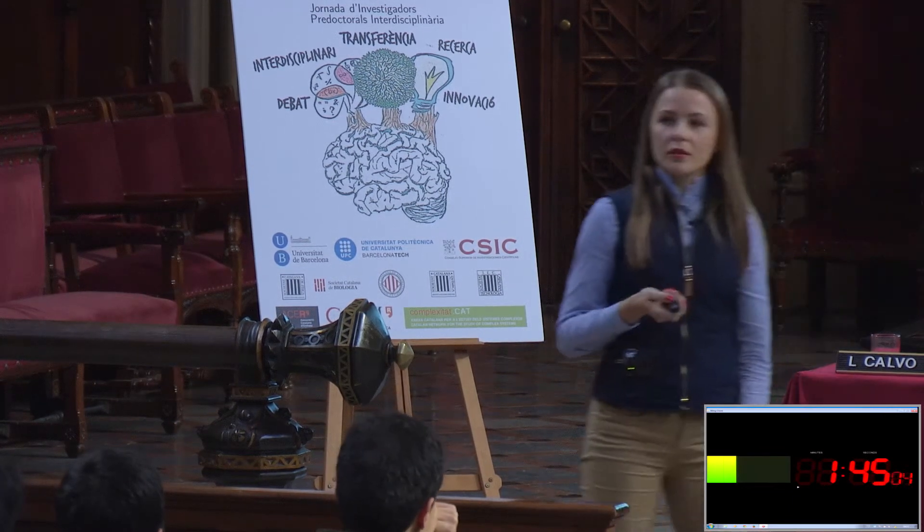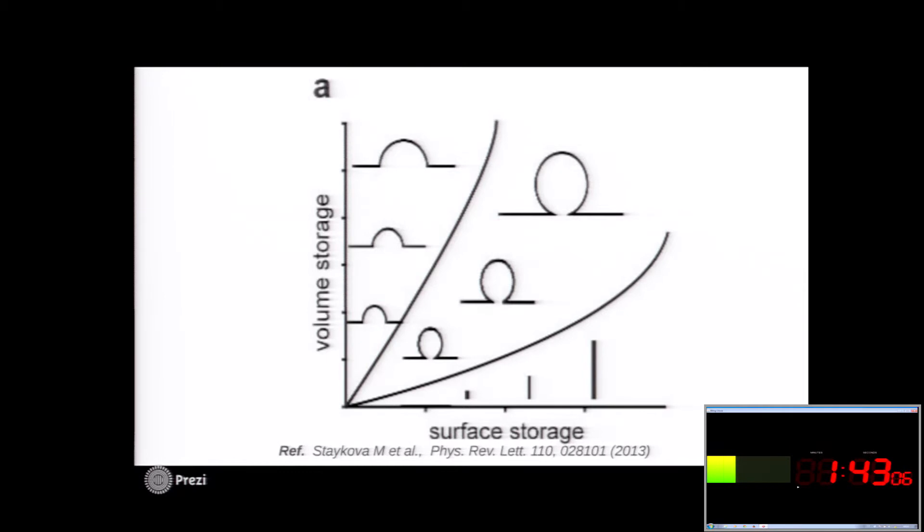Here you can see the model that was established for synthetic lipid bilayers. And it says that the easiest way for the cell to store the volume is by making hemispherical structures just like VLDs. And the easiest way to store the surface is by making tubular invaginations.